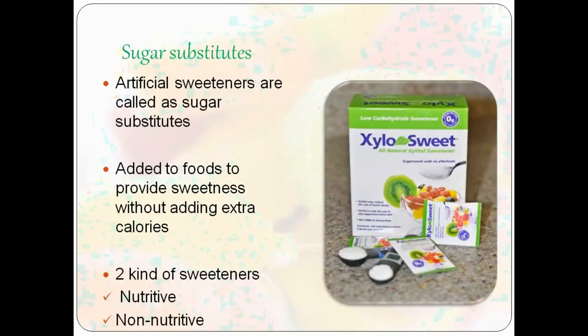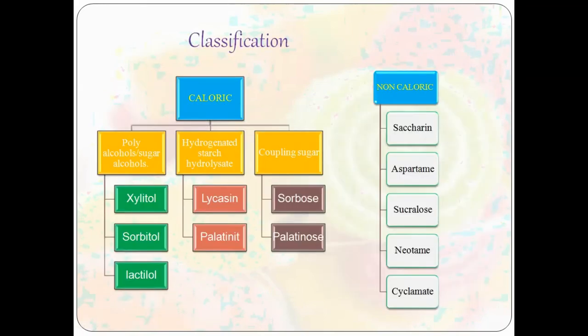Now let's look at sugar substitutes. These are artificial sweeteners added to food to provide sweetness without providing any extra calories. Basically, there are two types: nutritive and non-nutritive, also classified as caloric and non-caloric.